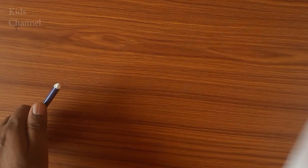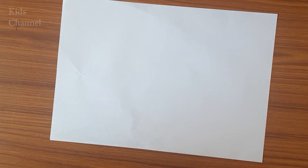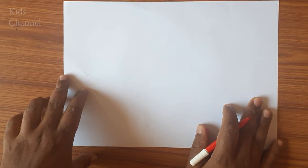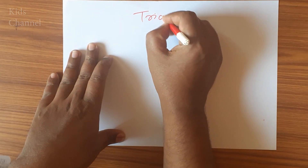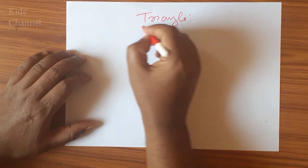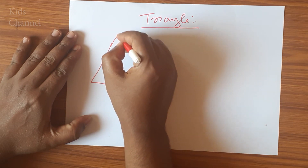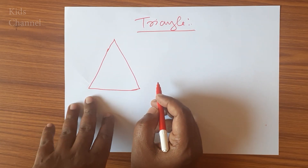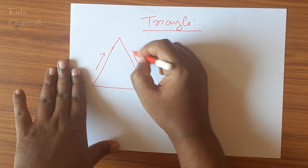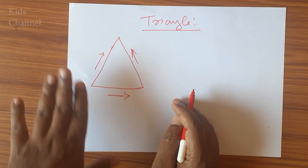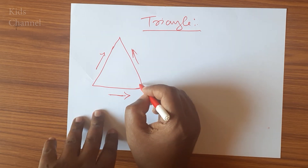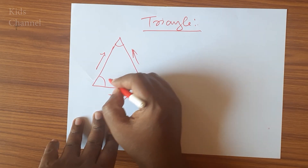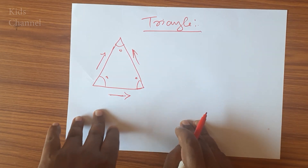Now we will see what you mean by triangle. A triangle is an object with 3 straight sides — side 1, 2, and 3 — and 3 angles.